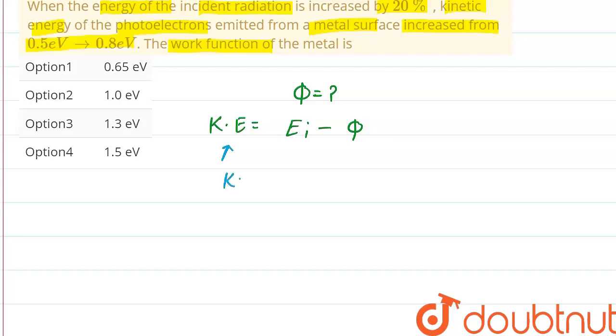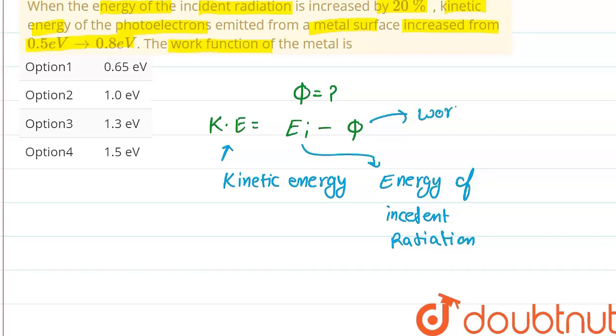This is kinetic energy. This is energy of incident radiation. And this is the work function of metal.